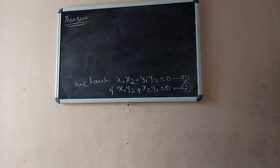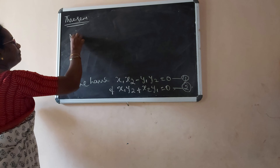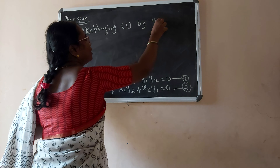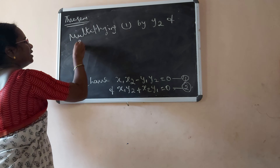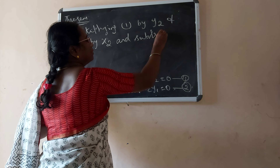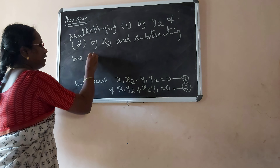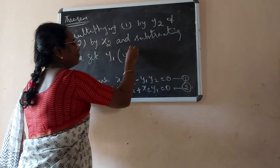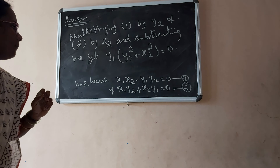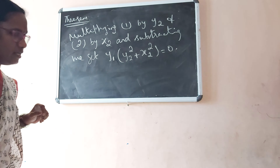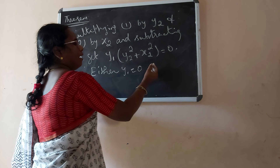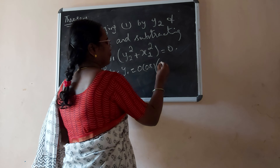Suppose Z1 into Z2 is equal to 0. What we have to prove is Z1 into Z2 is not equal to 0, but we are going to prove it using the contradiction method. So if not, we take Z1 into Z2 equal to 0. We have X1 X2 minus Y1 Y2 is equal to 0 — call this equation 1 — and X1 Y2 plus X2 Y1 is equal to 0 — call this equation 2.